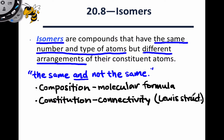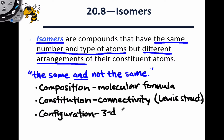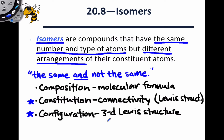Finally, even molecules with the same connections between atoms can differ in the three-dimensional placement of those atoms in space. This is what we call the configuration of the molecule, most succinctly represented in a three-dimensional Lewis structure that shows where the atoms are located in space. These two different levels of structure — constitution and configuration — are associated with two different types of isomers, which we'll talk about in this video.